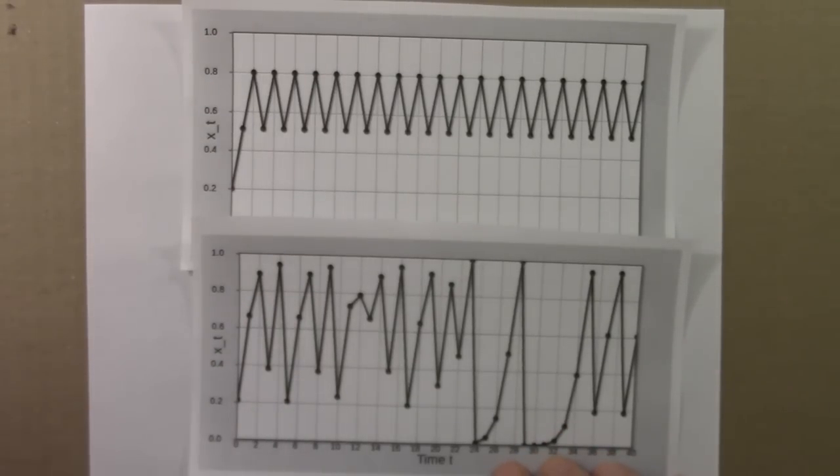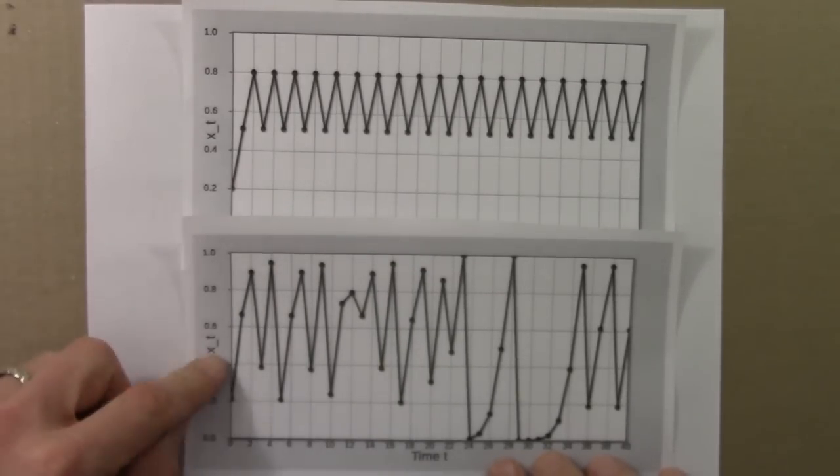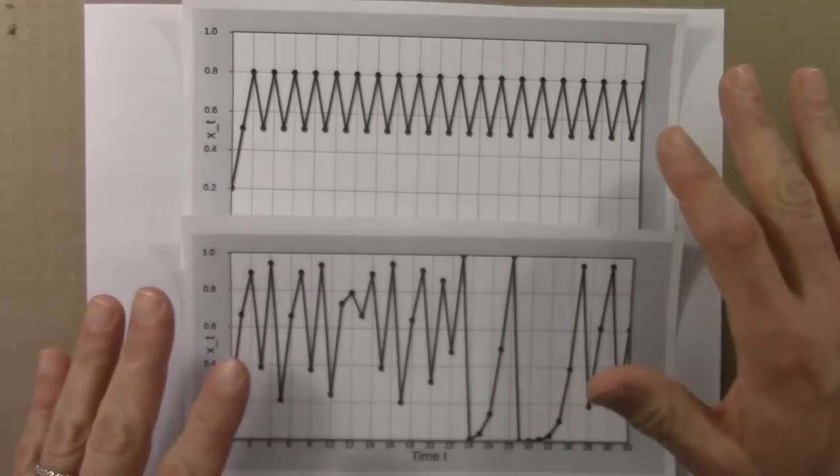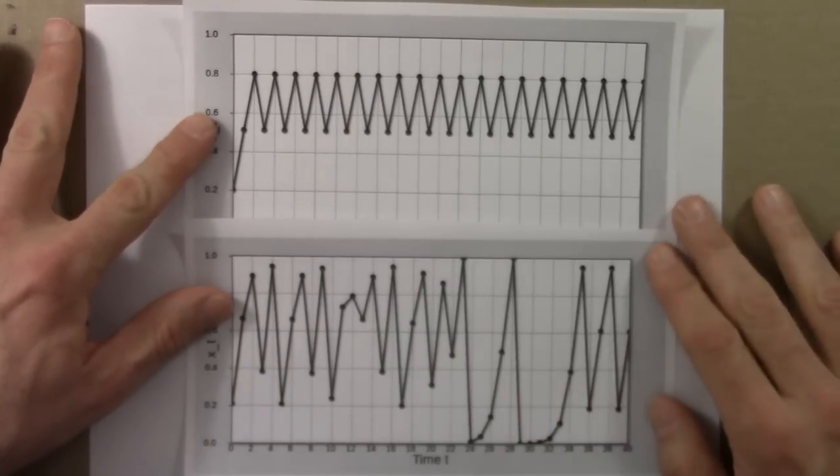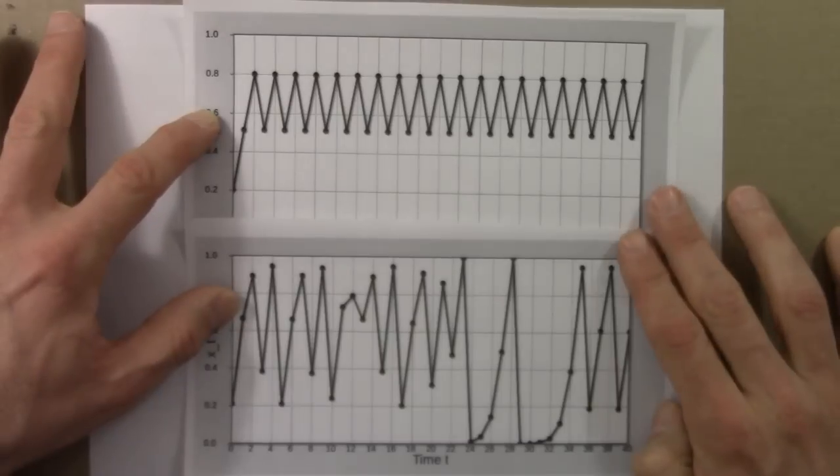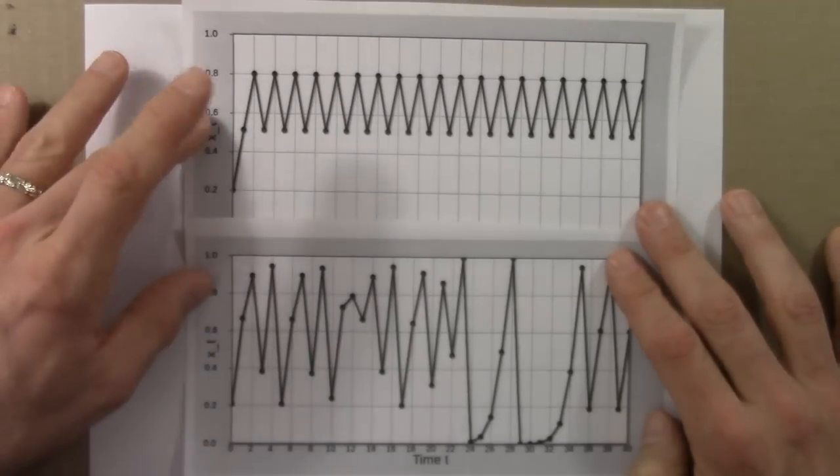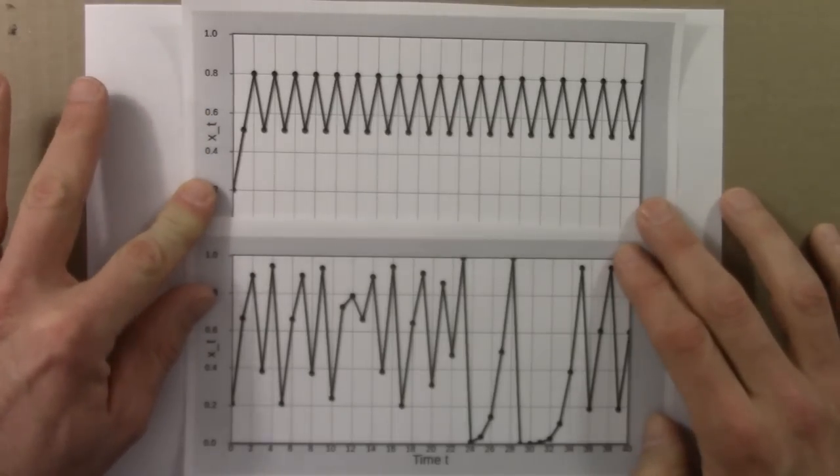But chaos says, no, that's actually not true. That you can get disorder from an orderly system, deterministic randomness. That randomness and order aren't these completely separate things that we need to think of in a completely different way. That in a sense, they're maybe two sides of the same coin. So this suggests that randomness and order are, that the relationship between them is a little more subtle than one might have thought. They're not sort of complete opposites that need to be thought of completely differently.